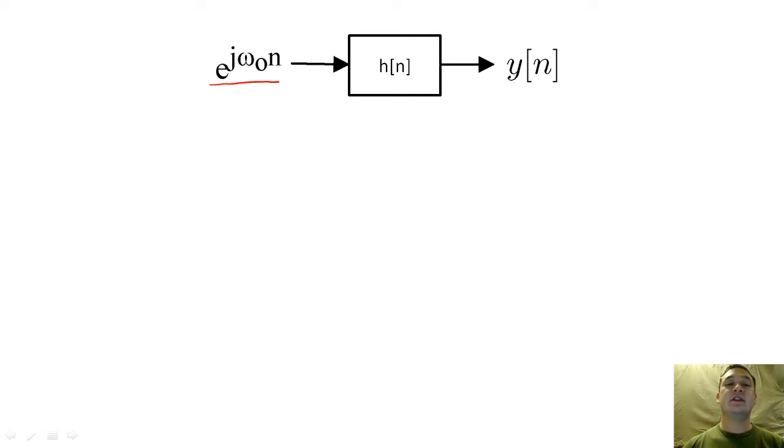Since the DTFT is linear, if we know how the system will respond to one e to the j omega naught n term, then we know how the system will respond to a collection of these terms because we can simply add them together.